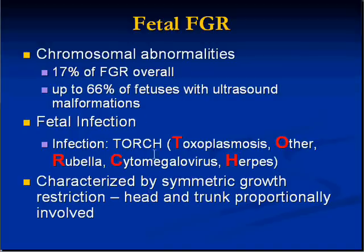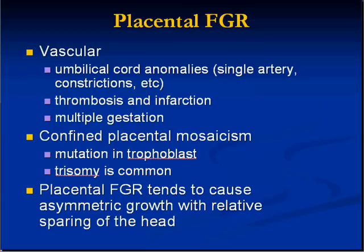In a baby born growth-restricted, if it's a fetal cause the restriction is symmetrical — meaning both the head and the trunk are proportionately and equally involved. If on the other hand the growth restriction is due to a placental problem — vascular malformation, thrombosis, chromosomal issues, whatever — it will be asymmetrical growth, with a relative sparing of the head size and a relatively greater decrease in body size.